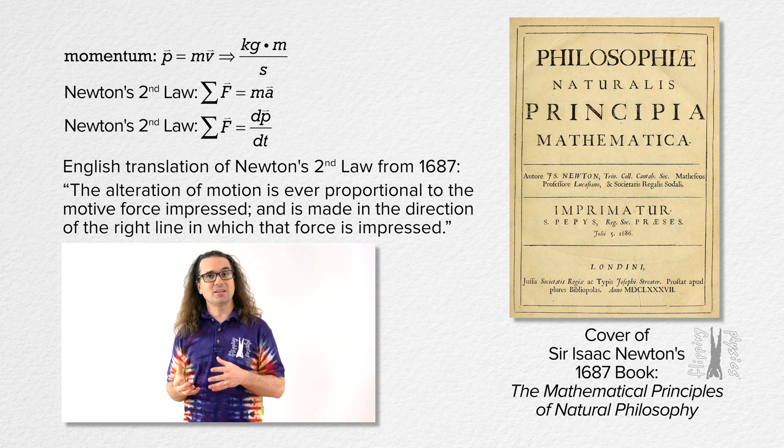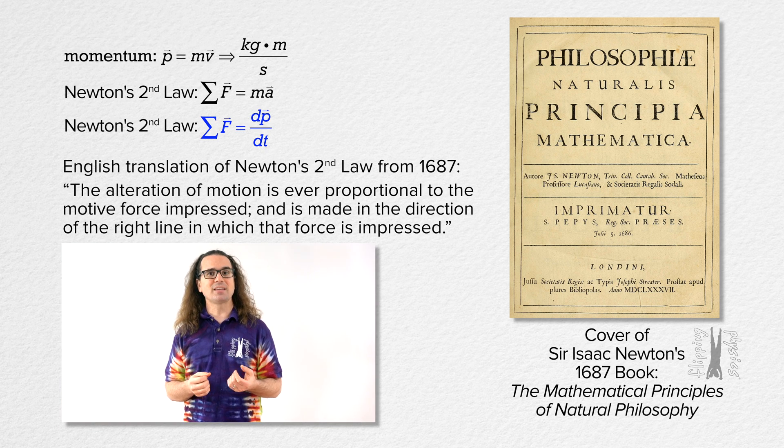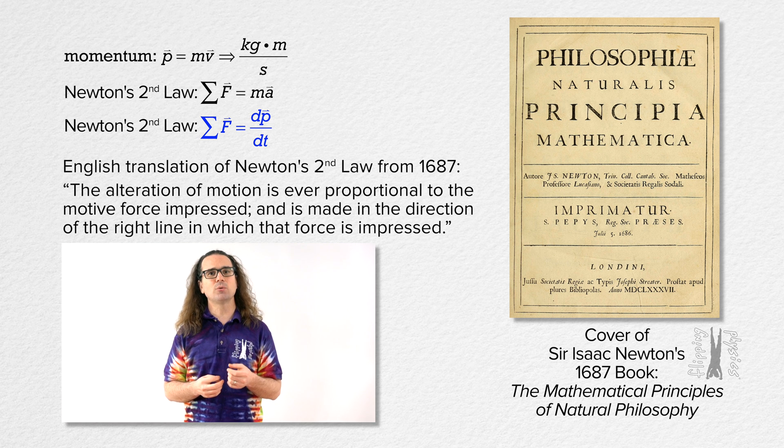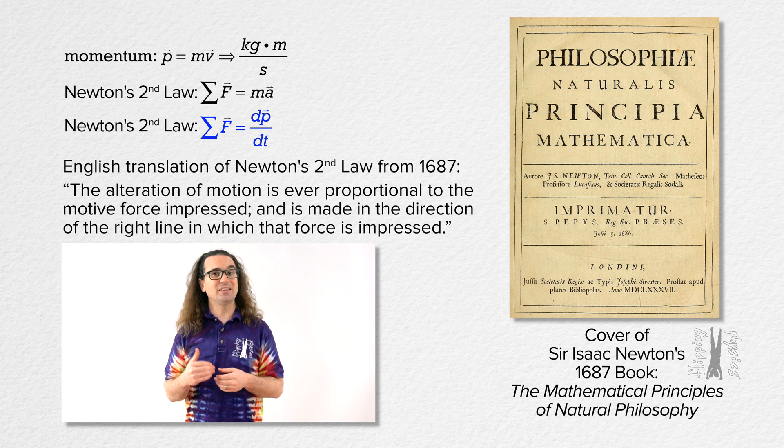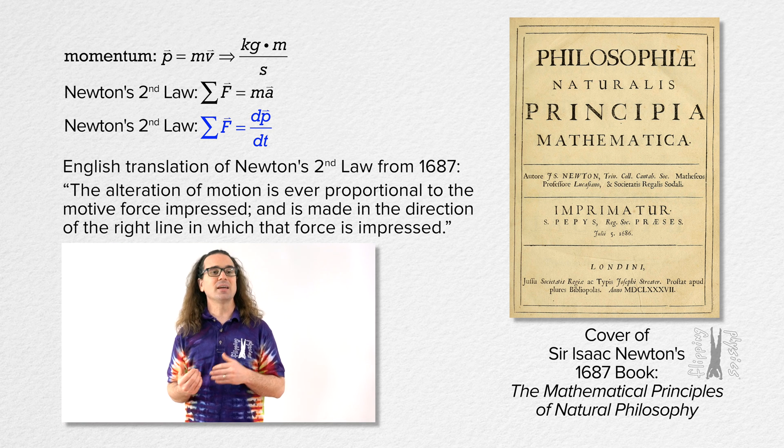Newton's second law in terms of momentum states that the net force acting on an object, or a system of objects, equals the derivative of momentum with respect to time, where both force and momentum are vectors. Billy, please substitute in the equation for momentum and take the derivative.